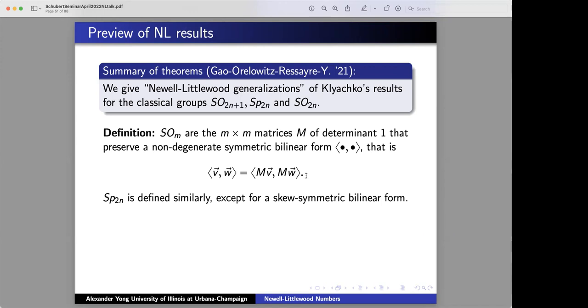Similarly, you can define the symplectic group only for even 2N, except that instead of using a symmetric bilinear form, you use a skew symmetric bilinear form. And there, the determinant is always 1.